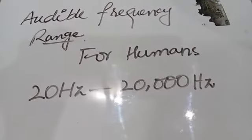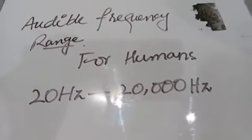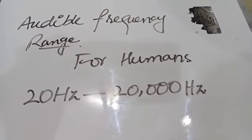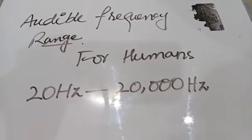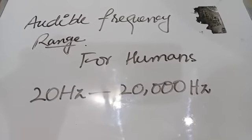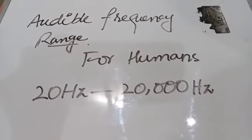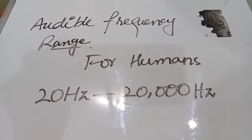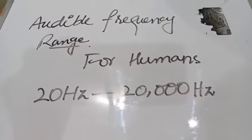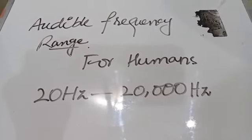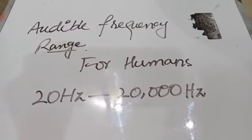The audible frequency range is defined as the range of frequencies that the human ear can hear. Different animals have different ranges: bats can hear frequencies up to 120,000 Hz, mice up to 100,000 Hz, dogs up to 35,000 Hz, cats up to 25,000 Hz, and humans only up to about 20,000 Hz, though children can usually hear higher frequency sounds than adults.